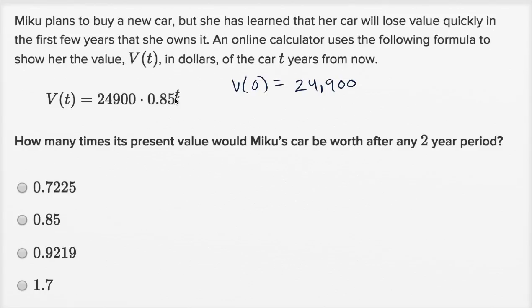And you can see where this is constructed, because every year that goes by, we're only going to retain 85% of the value. So after a year, it's gonna be 24,900 times 0.85 once. After two years, we're gonna take 85% of its value for the first year, and then 85% of that for the second year.